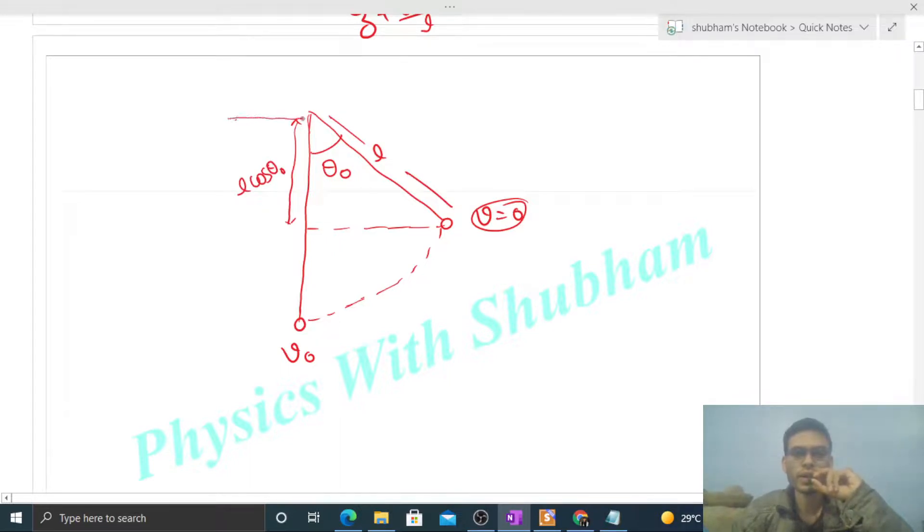So decrease in height of this pendulum will be L times one minus cos theta naught. So decrease in potential energy of the pendulum will be M into G into L times one minus cos theta naught.